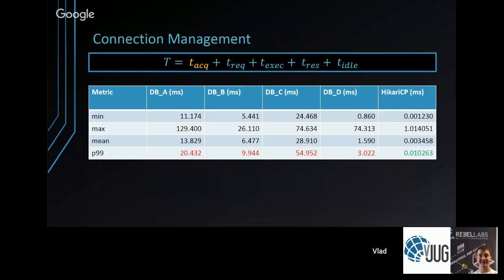If you use a connection pool like HikariCP, the time to acquire a connection drops to about 10 microseconds — a significant improvement. Another advantage is that connection pools level out traffic spikes by introducing a queue, so you're not pushing all traffic directly to the database. If a traffic spike hits, it affects the service but not the whole system.